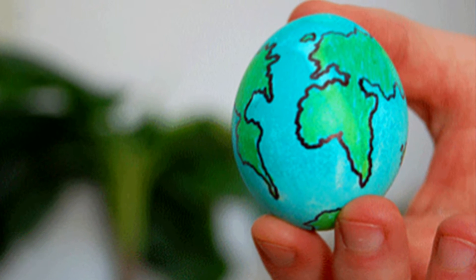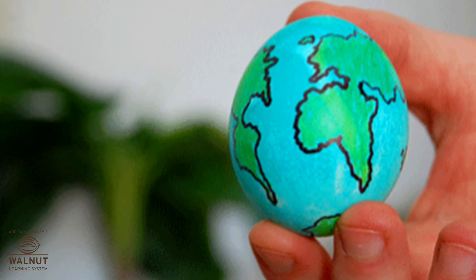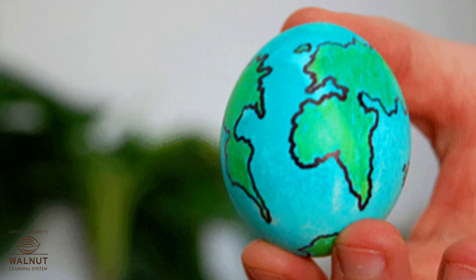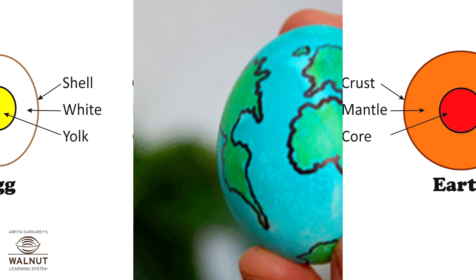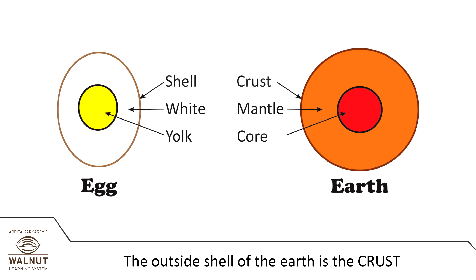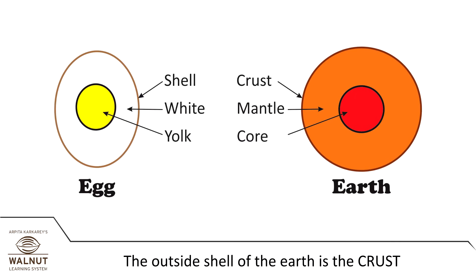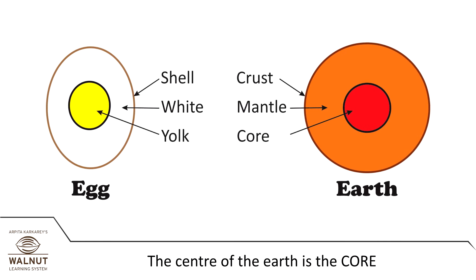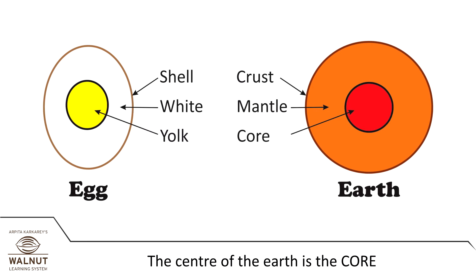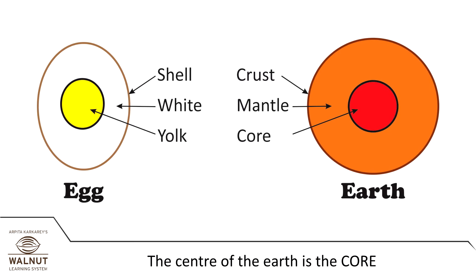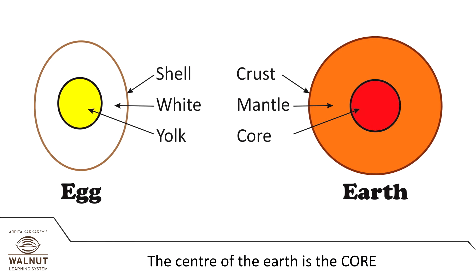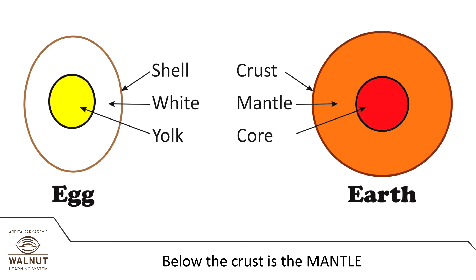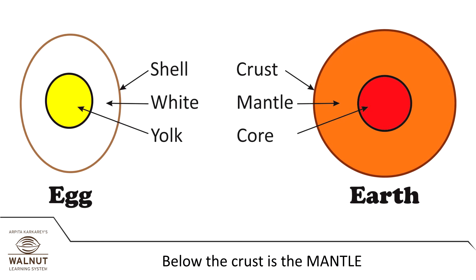The Earth is made up of three parts. You can compare it to the parts of an egg. The outside shell of an egg is like the crust of the Earth. The yolk at the center of the egg is like the core of the Earth. The white part of the egg is like the mantle of the Earth.